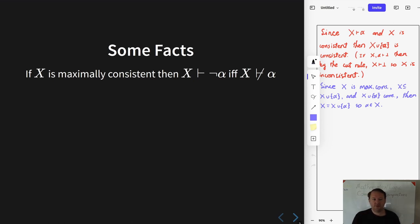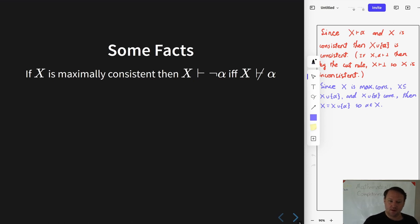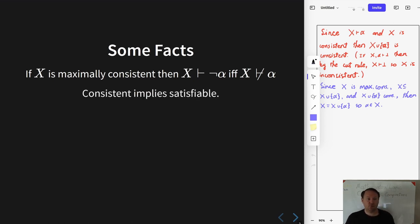To begin with, I'm going to state a fact without proof because the proof is very easy. The fact is that if x is a maximally consistent set, then it proves negation alpha if and only if it does not prove alpha. I'm going to use that fact in the proof of the next fact, which is that every consistent set is satisfiable.